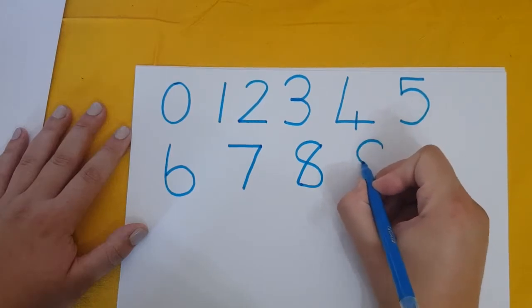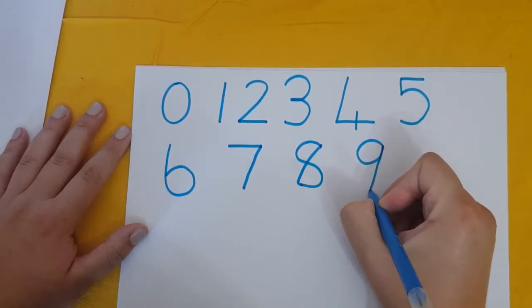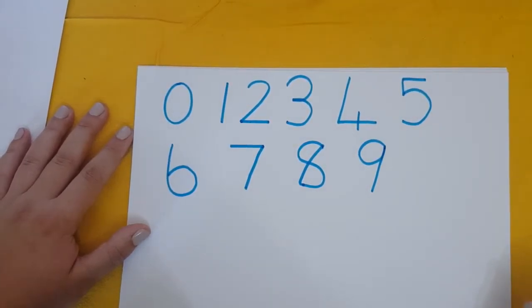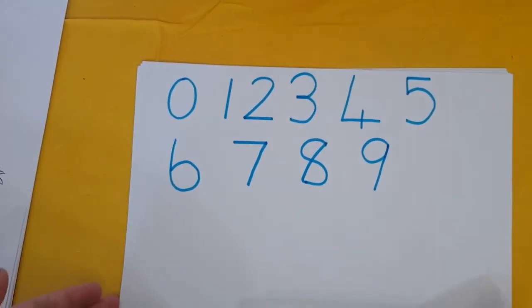First you make a circle, then you add a line. Now we have the number 9.